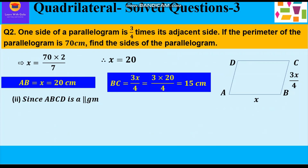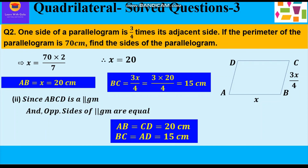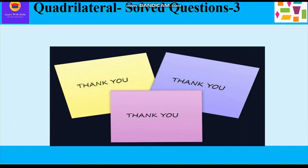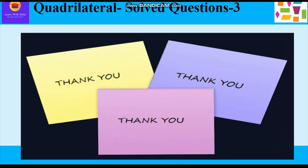Since ABCD is a parallelogram and opposite sides are equal, AB = CD = 20 cm and BC = AD = 15 cm. These two questions are of the same type and I hope you have understood them very well. Please do like and subscribe to my channel. Thank you everyone, have a good day ahead.